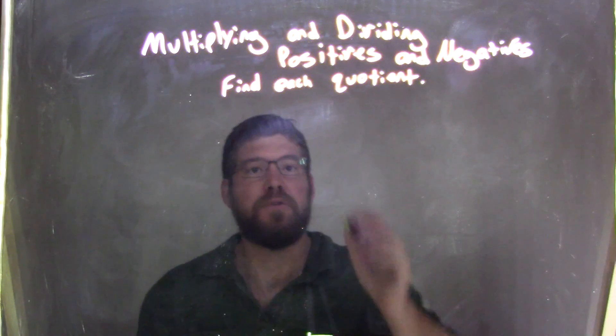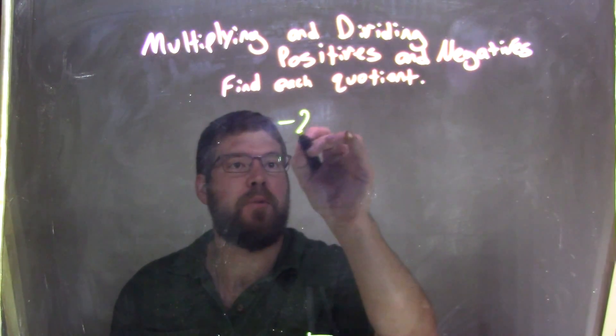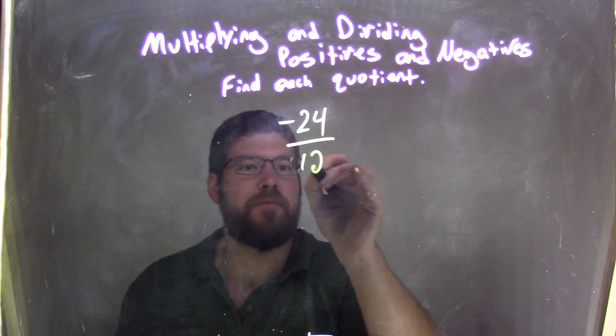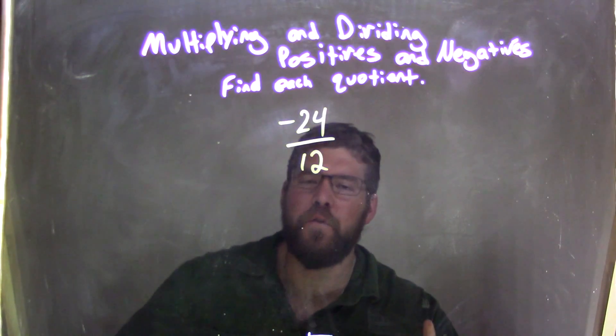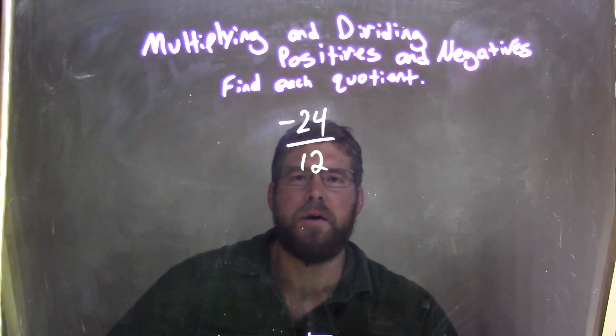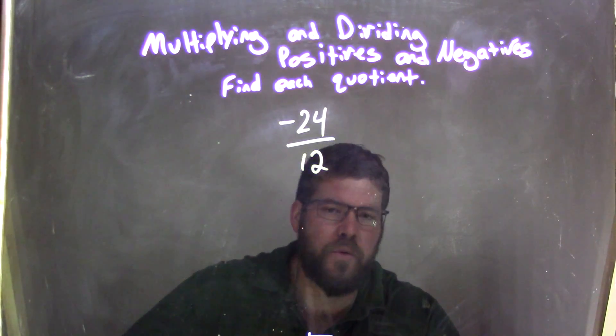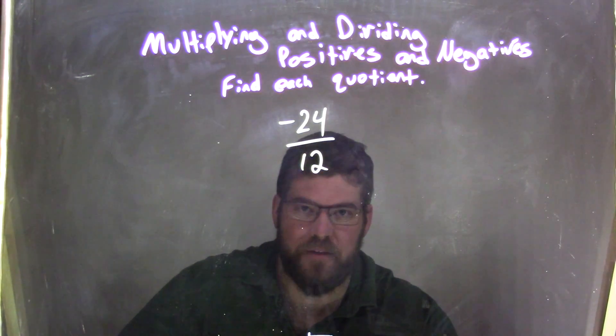If I was given this quotient, negative 24 divided by 12, and I wanted to find that quotient. We're trying to think how many times 12 goes into 24, and if you're quick, it's 2, and our answer is negative 2.